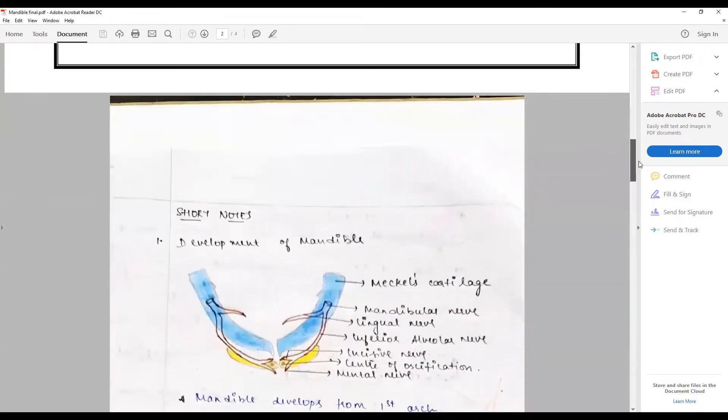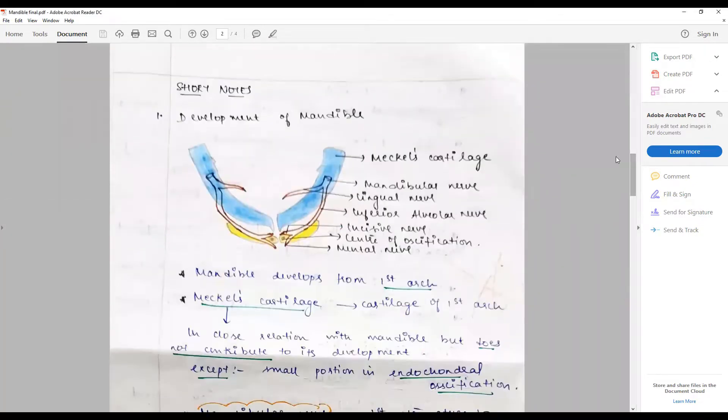So to begin with development of mandible, it is advisable to draw a diagram of the entire processes. This particular diagram you would have seen in your anatomy books.